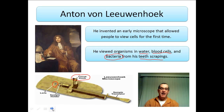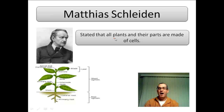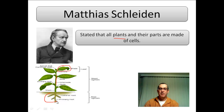Von Leeuwenhoek found many different kinds of organisms under his microscope. The next scientist, Matthias Schleiden, was a botanist who studied plants. He looked at various plants and their parts — leaves, stems, and roots — under the microscope, examining their tissues and structures, and found that all plants and their parts are made up of cells.